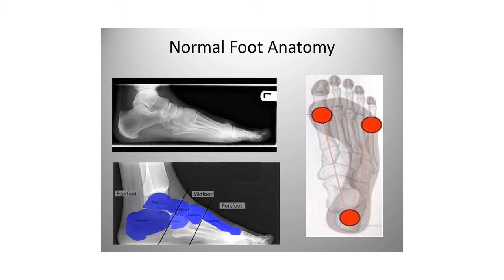This is what our normal foot anatomy should be composed of. Here is a lateral x-ray of a foot. This is the back part of the foot — the heel bone or calcaneus — these are the tarsal bones, these are the metatarsal bones, and these are the phalanges or toes. It's broken down into three sections: the rear foot, made up of the calcaneus and the talus; the midfoot, made up of the navicular, cuneiform, and cuboid bone; and the forefoot, which is the metatarsals and phalanges.